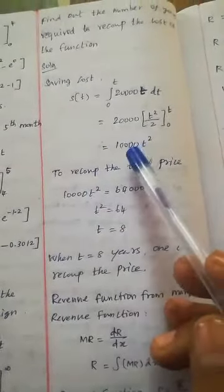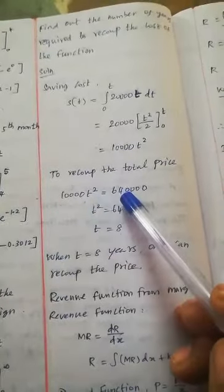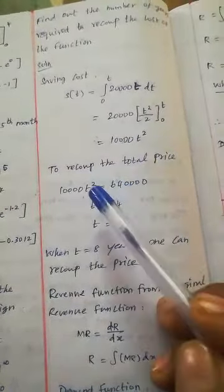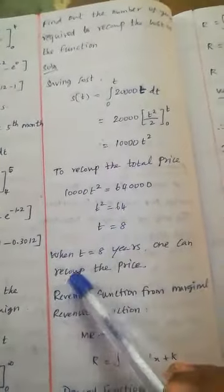To recoup the price, S(t) = 10,000t². Setting this equal to 640,000: 10,000t² = 640,000, so t² = 64, therefore t = 8 years.